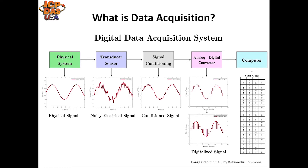The components of data acquisition systems include: sensors to convert physical parameters to electrical signals; signal conditioning circuitry to convert sensor signals into a form that can be converted to digital values; and analog-to-digital converters to convert conditioned sensor signals to digital values. A data acquisition module is any device designed to collect field sensor data — it's an intermediary device between you and the sensors. Most sensors output data in a raw format that can't be read by a PC or tablet, so the DAQ module takes that sensor data and presents it in a format that can be understood by your PC or controller.